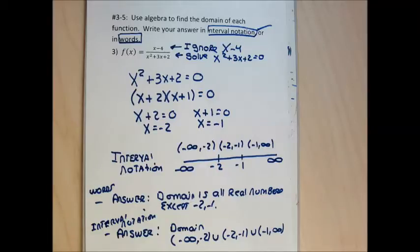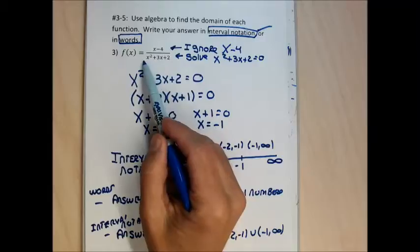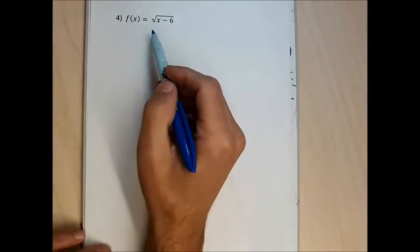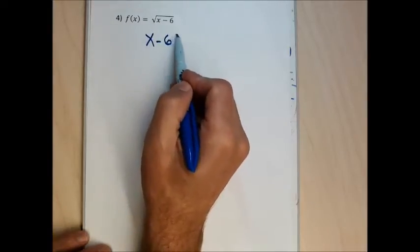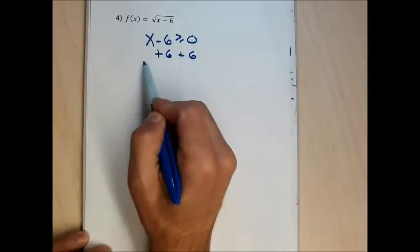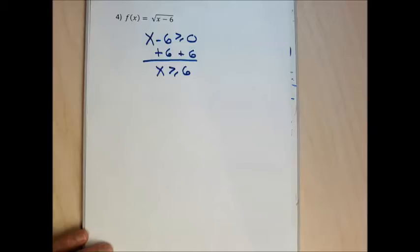The next problem gives a square root and asks for the domain. To find the domain of a square root, take the radicand — what's under the square root — and set it greater than or equal to zero, then solve for x. Unlike with fractions, this actually gives you something equivalent to the domain directly. I'll write the domain both in words and in interval notation, though the algebra itself already tells you what the domain is.